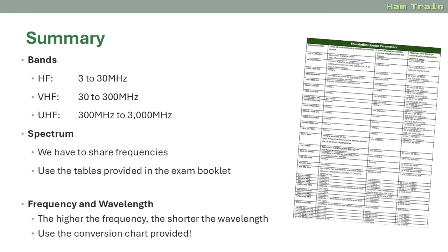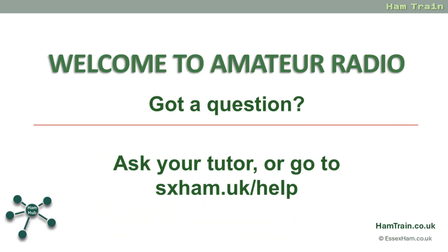In summary: remember the bands — HF is from 3 to 30 MHz, VHF is from 30 to 300 MHz, UHF 300 to 3000 MHz. Remember too that we have to share our frequencies with other radio users, and in the exam you'll be provided with tables to show who's allowed to use which frequencies. Also remember frequency and wavelength: the higher the frequency, the shorter the wavelength. Use the conversion chart supplied with your exam. That's all for this section — welcome to Amateur Radio.